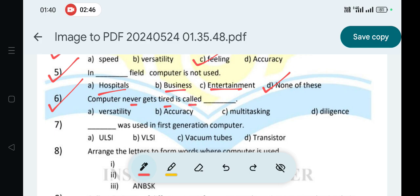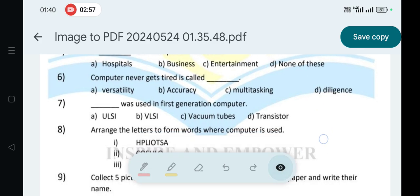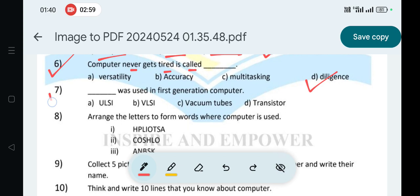Computer never gets tired is diligence. Diligence is correct. Question number seven: dash was used in the first generation. Vacuum tubes were used.